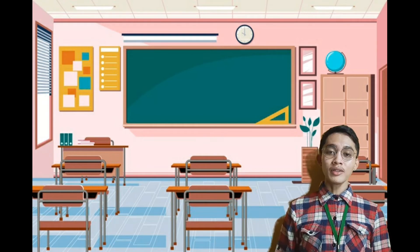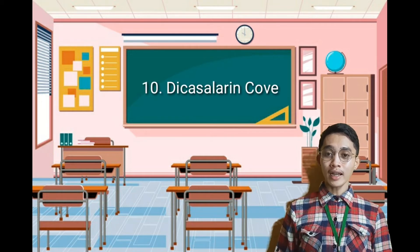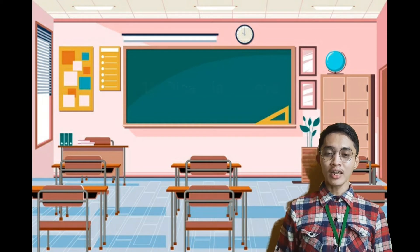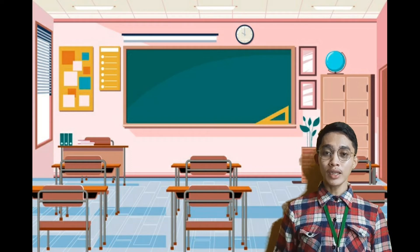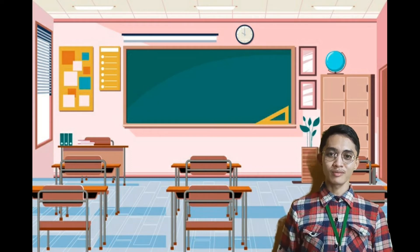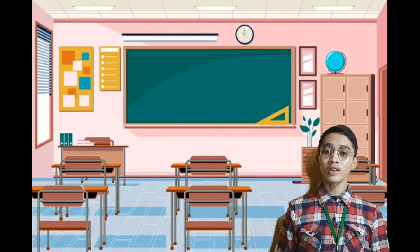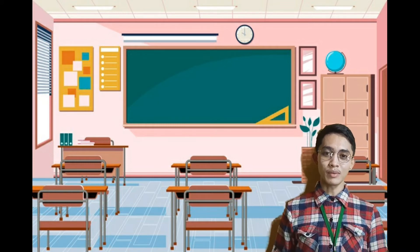Number ten is Dicasalarin Cove, a secret beach cove in Baler, Aurora. It is the most famous beach located in Dicasalarin Cove. Those are the ten forms of water in the Philippines.